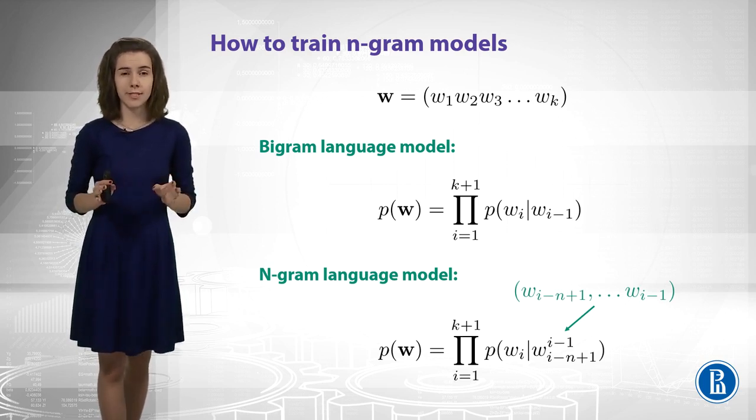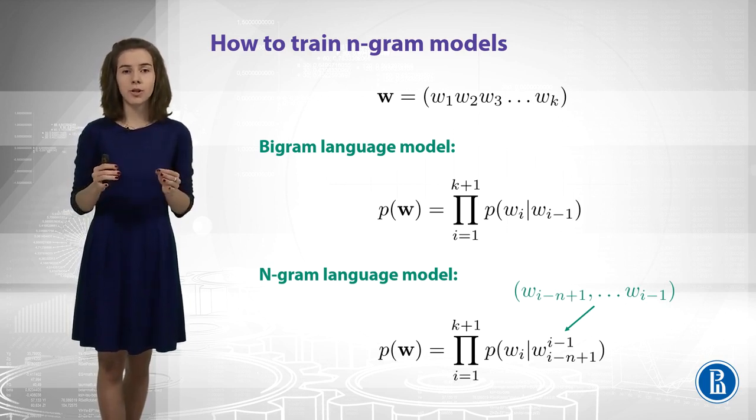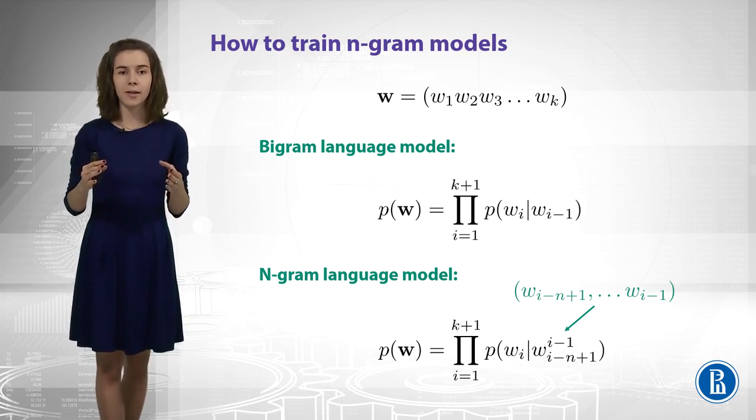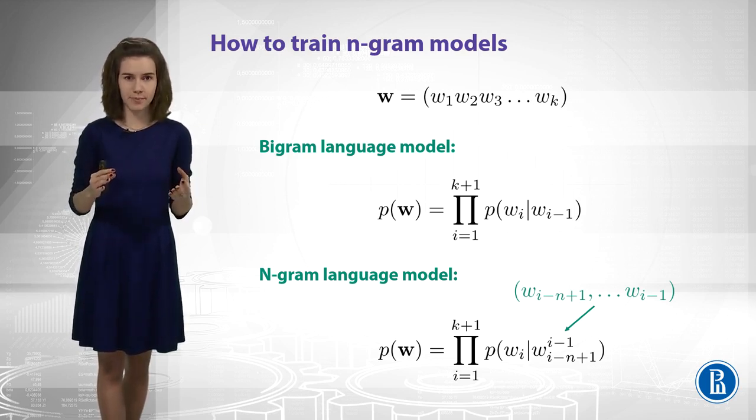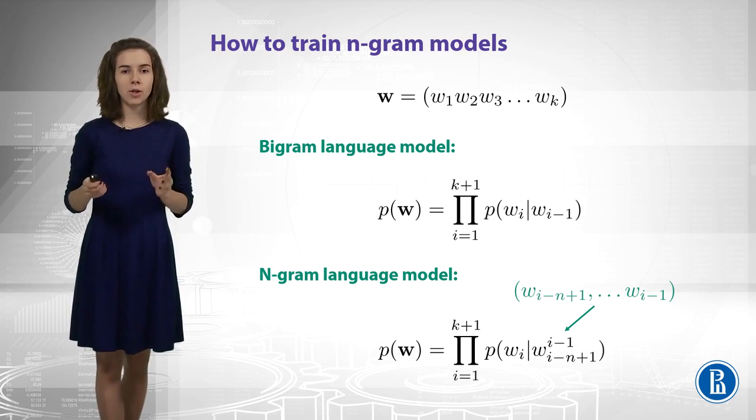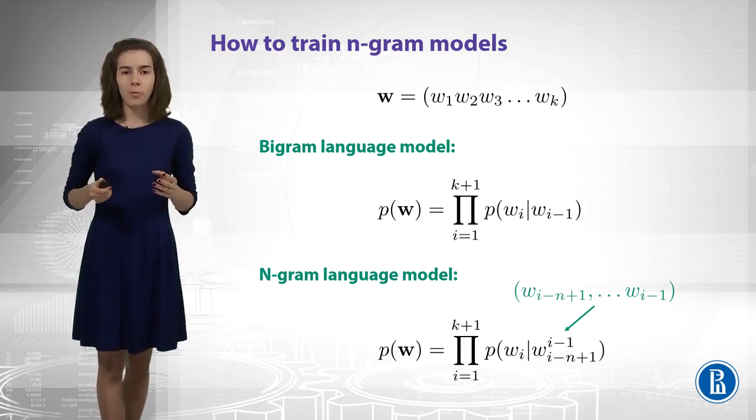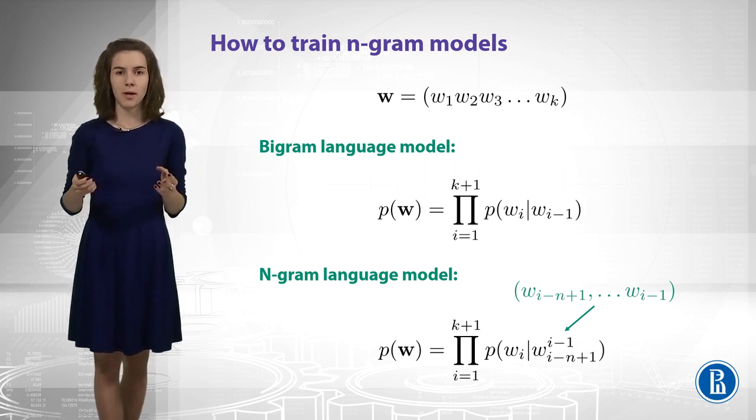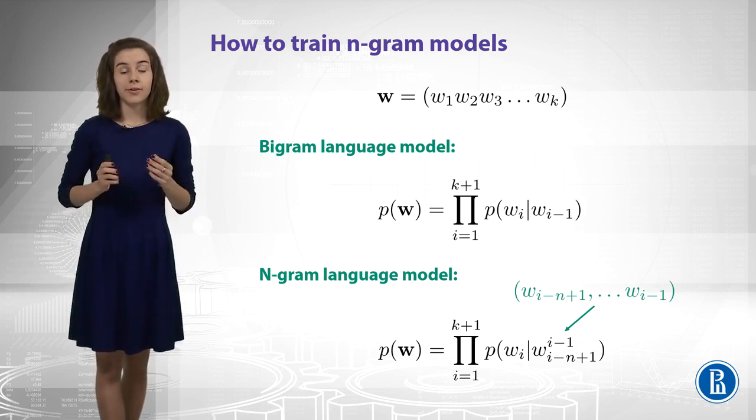So the only difference here is that the history gets longer. So, we condition not only on the previous word, but on the whole sequence of n-1 previous words. So just take a note to these notations here, this is just a brief way to show that we have a sequence of n-1 words.